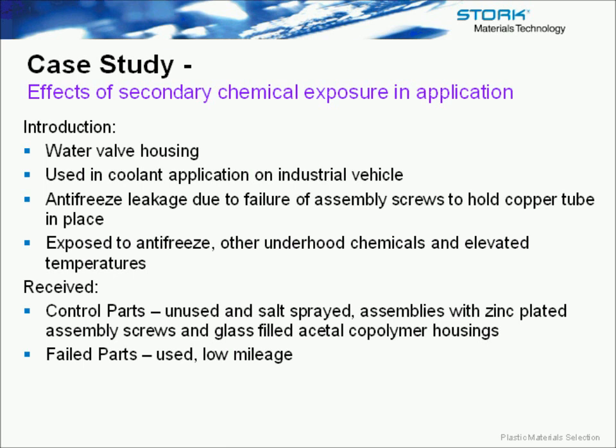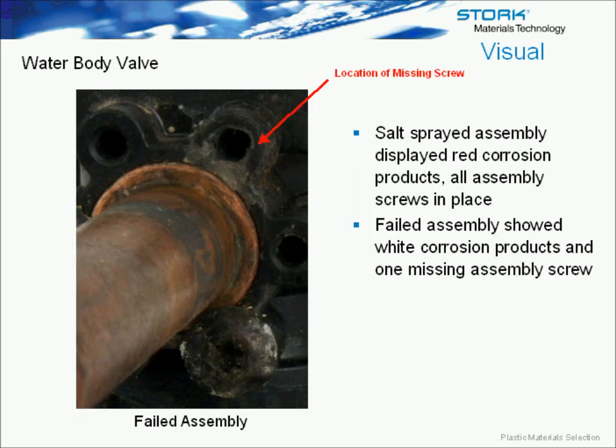The second case study is looking at the secondary chemical exposure effects in the application. This part was a water valve housing used in a coolant application on an industrial vehicle. What happened is antifreeze started leaking due to failure of the assembly screws to hold a copper tube in place onto the body of the water valve. Basically this part is exposed to antifreeze and other underhood chemicals at elevated temperatures. We received for analysis both unused parts, salt-sprayed parts, and those assemblies — basically zinc-plated screws that hold the copper tube in place and then a glass-filled acetal copolymer housing. The salt-sprayed part was the customer trying to simulate the end application, and they were unable to recreate the failure. We also got some failed parts that had been used and showed failure, and they had significantly low mileage on them.